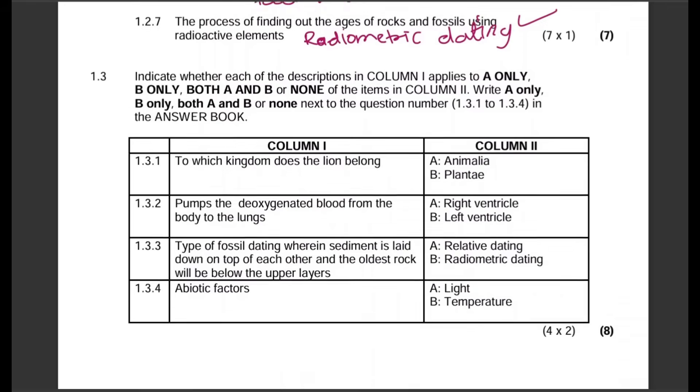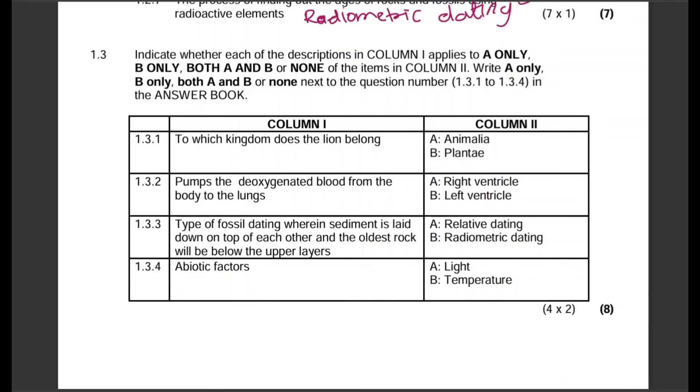For question 1.3, this is a very specific column one column two question. Please follow the instructions. This is not a normal column A column B question. The instruction here is asking you to indicate whether each of the descriptions in column one applies to A only, B only, both A and B, or none. How do you answer? You write A only, B only, both A and B, or none. Please write the word 'only', that's an instruction.